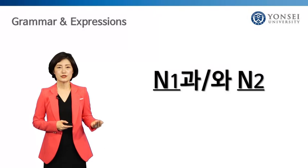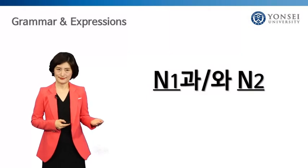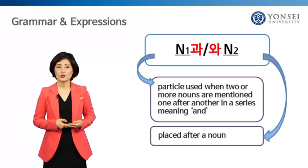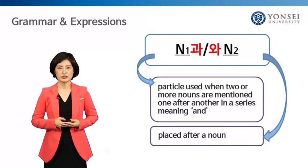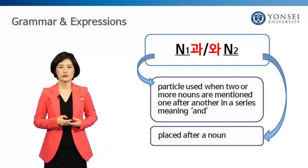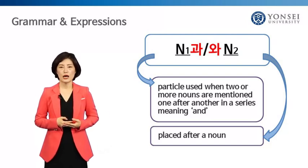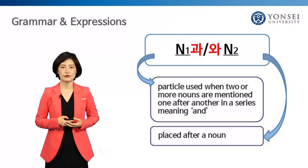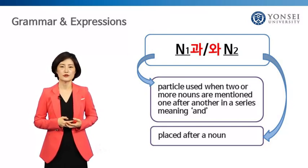Now let's study how to list two or more nouns using the particle 과, 와. You already learned the word 하고 in module 3 for connecting nouns. 과, 와 has the same function. It is a particle placed after a noun when two or more nouns are mentioned one after another in a series. It means 'and' in English. 과, 와 is used both in colloquial and written expressions, but 하고 is used more often in colloquial expressions.